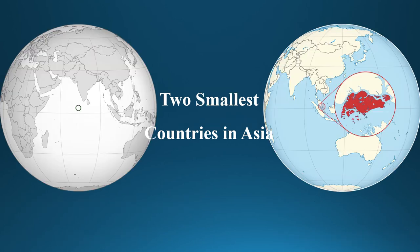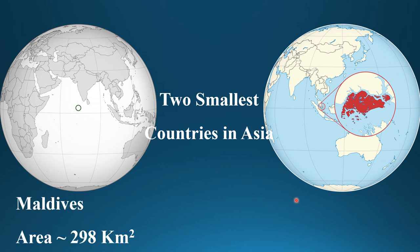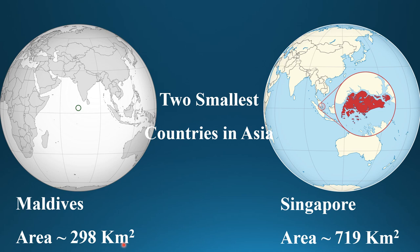The two smallest countries in Asia are the Maldives and Singapore. The Maldives is the smallest, with an area of 298 square kilometers. The second smallest country in Asia is Singapore, with an area of 719 square kilometers.